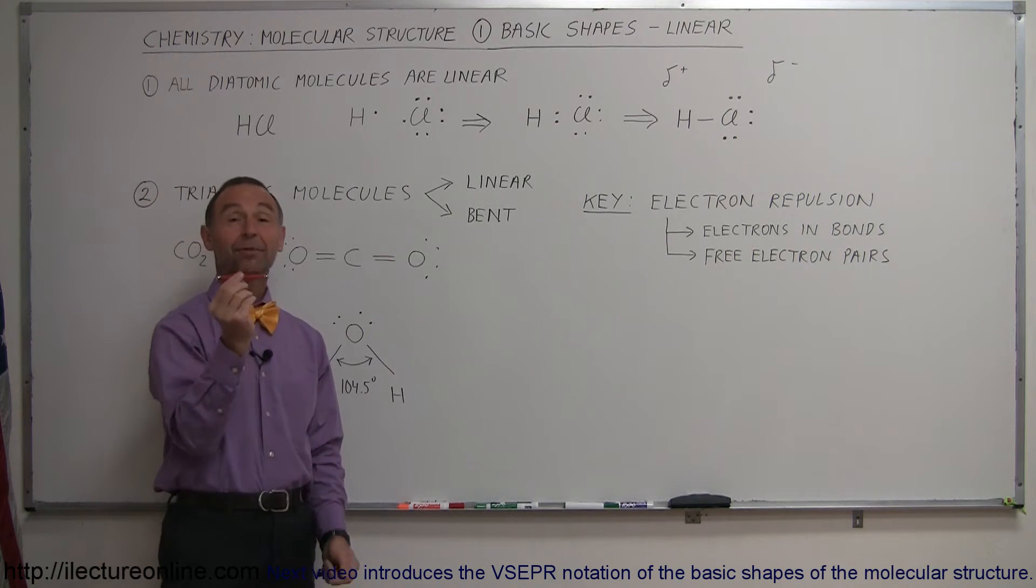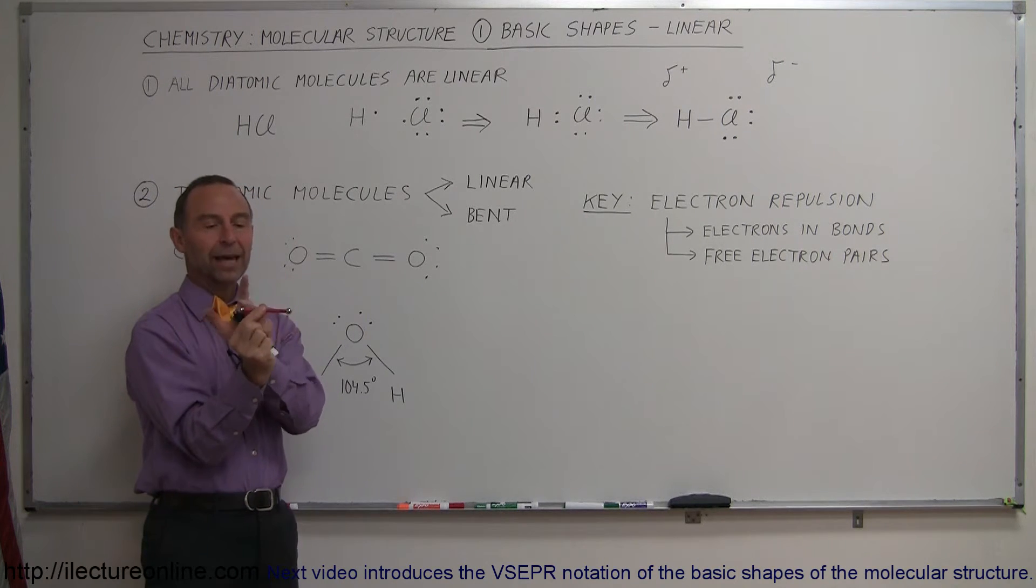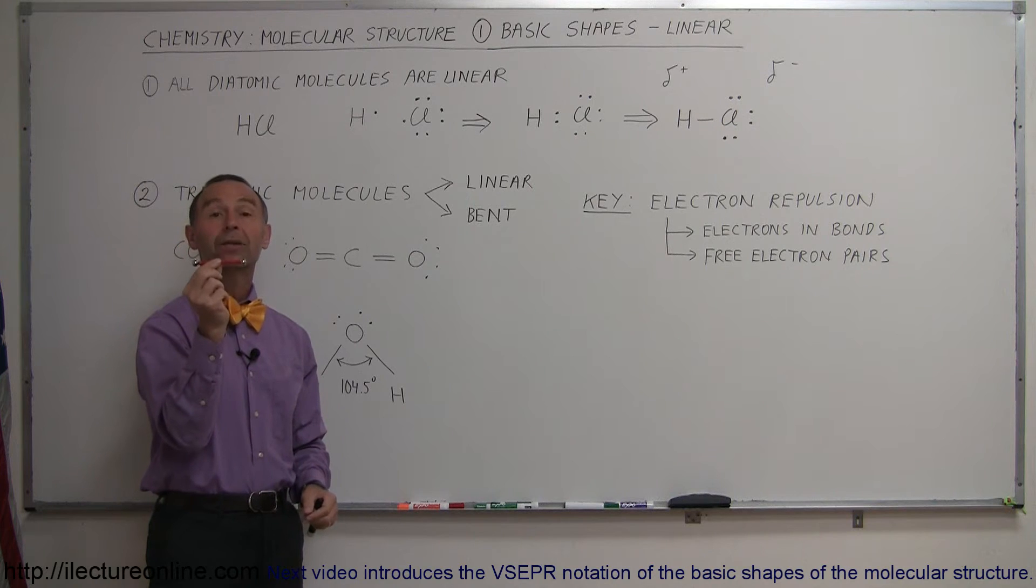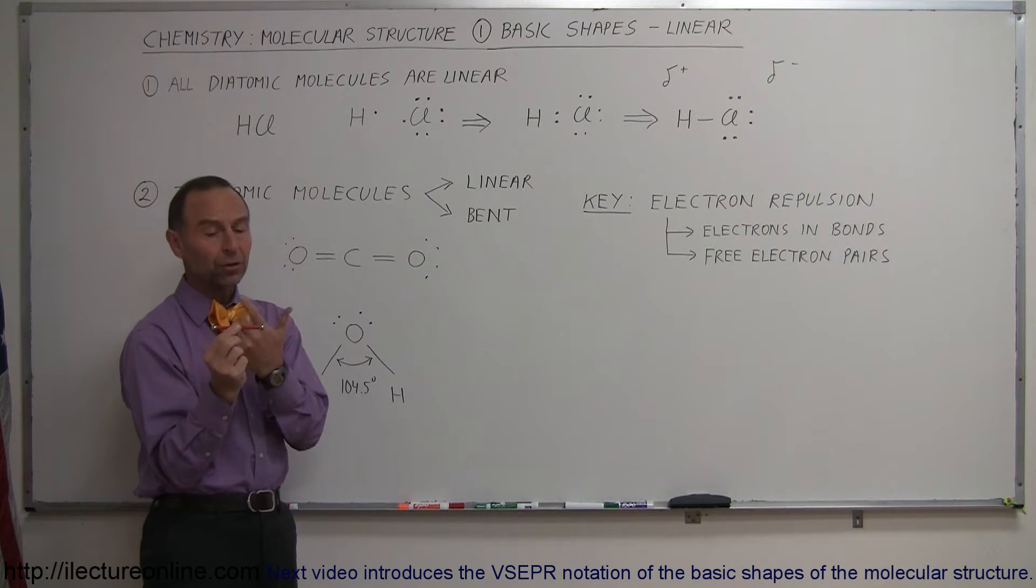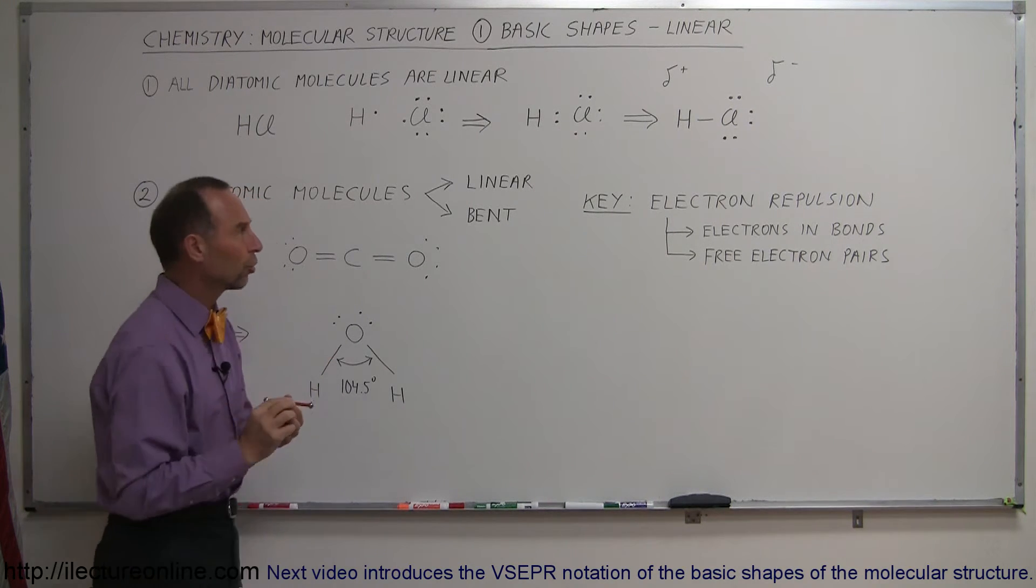Here's an example of a diatomic molecule - two atoms and two electrons bonding together. Sometimes you can have a double bond or triple bond, but in this case we'll just show you a single bond.